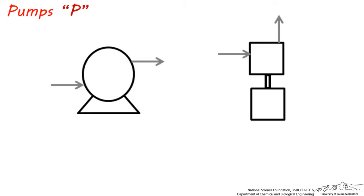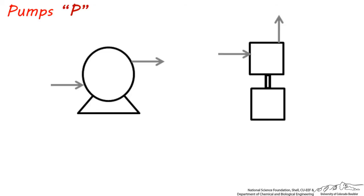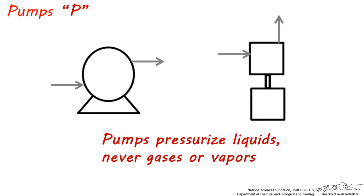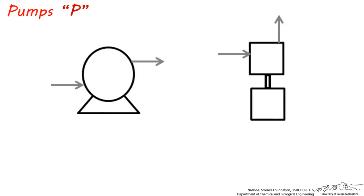These are all pumps, and they have the letter abbreviation P. This is the most common general symbol for a pump, and this is the representation of a pump with a spare. The job of a pump is to pressurize liquids. They should never be used to pressurize vapors, otherwise the pump will be damaged by cavitation. Remember that compressors are designed to pressurize vapor or gas.